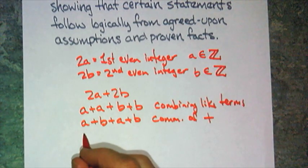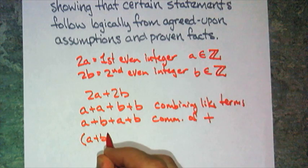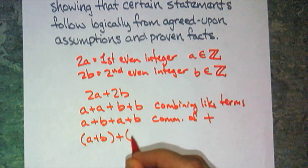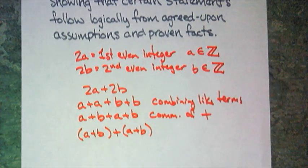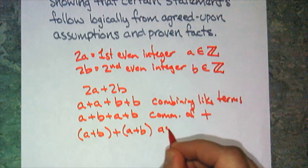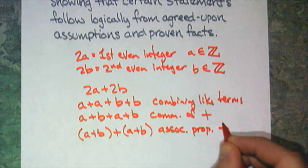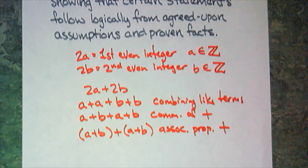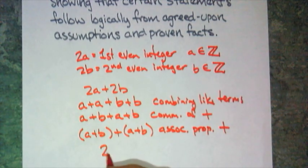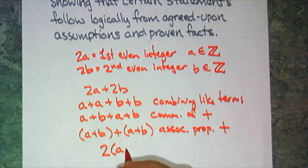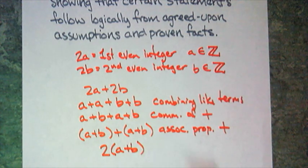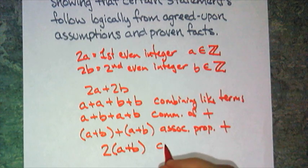Then, I can do something like this. That's a plus b, parentheses, plus the quantity of a plus b, parentheses. And that's the associative property of addition. And then, finally, I can say that that is the same thing as writing 2 times quantity a plus b. And that's combining like terms also.